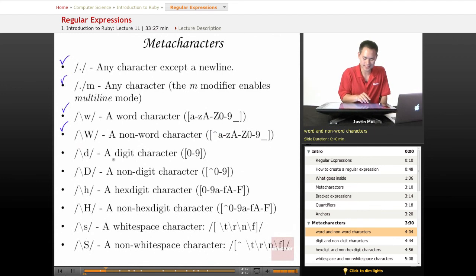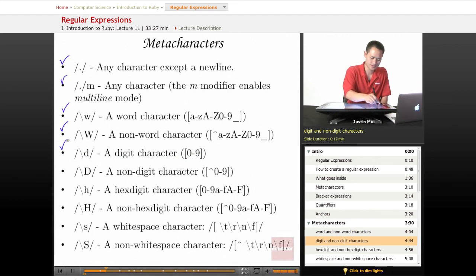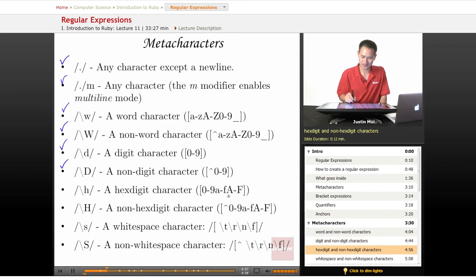The slash D matches a digit character, it's 0 through 9. A capital D does a non-digit character. You can match hex digit characters, 0 through 9, A through F. Capital H, a non-hex digit character. Here, the small.